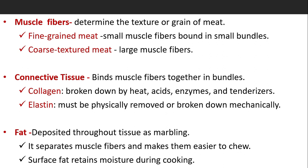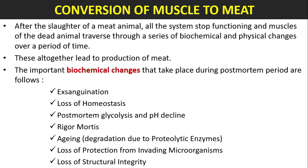Connective tissue binds muscle fibers together in bundles. Collagen is broken down by heat, acids, enzymes, and tenderizers. Elastin must be physically removed or broken down mechanically. Fat is deposited throughout tissue as marbling; it separates muscle fibers, making them easier to chew. Surface fat retains moisture during cooking.